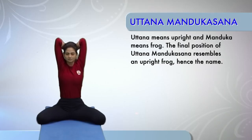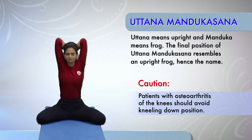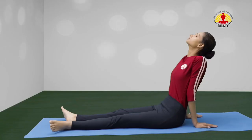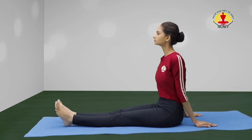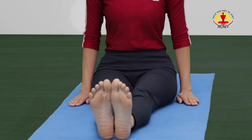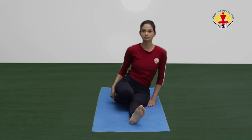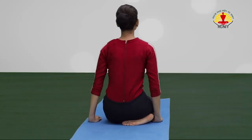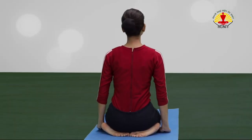Uttan Mandukasana or the stretched up frog posture. Caution! Patients with osteoarthritis of the knees should avoid kneeling down position. Start with long sitting posture. Sit with the back straight, legs stretched out in front, palms resting on the ground, fingers pointing forward. Fold the right leg at the knee and place the foot under the right buttock. Similarly, fold the left leg and place the left foot under the left buttock.